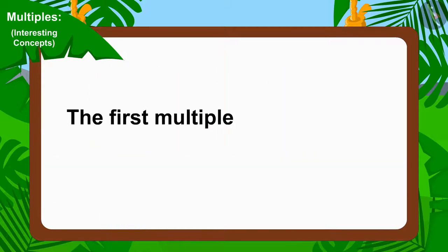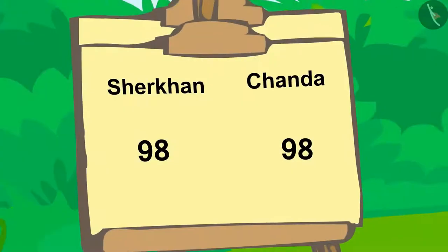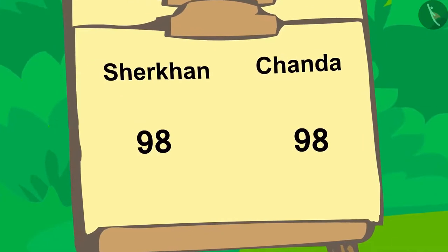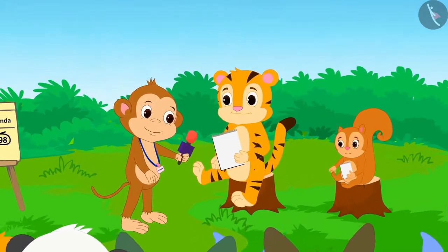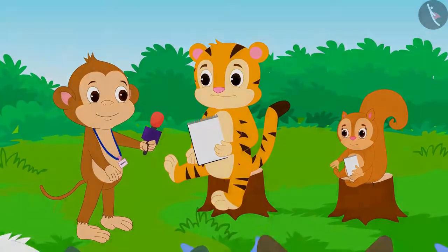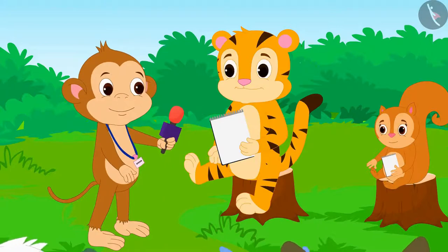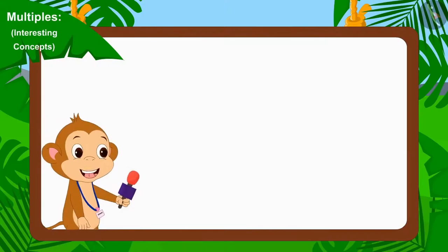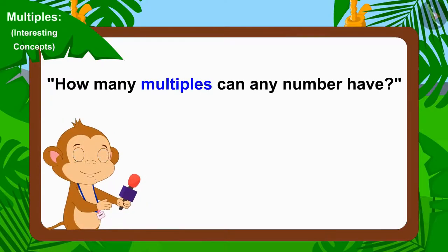The first multiple of any number is that number itself. Shir Khan is now one point ahead of Chanda. Let's see what the next question of the competition is. Babban asked: how many multiples can any number have?